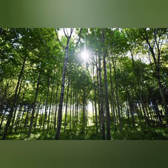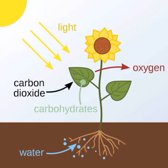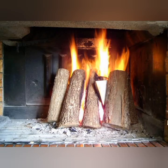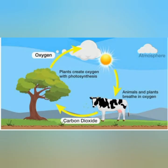Plants take in carbon dioxide for preparing their food. During photosynthesis, they release oxygen. This oxygen is utilized by living beings for their respiration and burning of materials. After burning and respiration, carbon dioxide is released. This carbon dioxide is again taken by plants for preparing food. That is why they balance the oxygen level in nature.